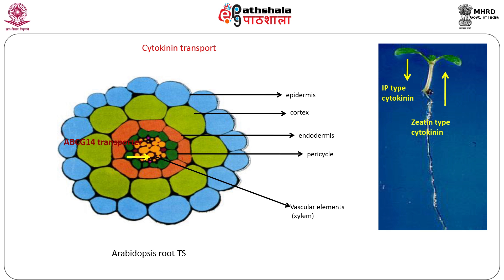The IP-type cytokinins are synthesized in the shoot and transported via the phloem through specific nucleoside transporters to other parts of the plant.